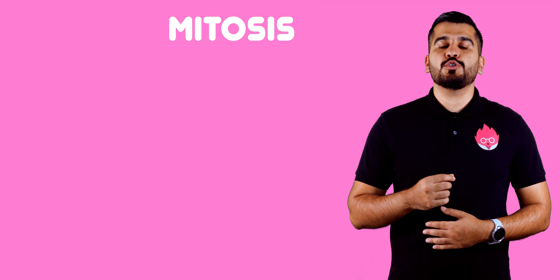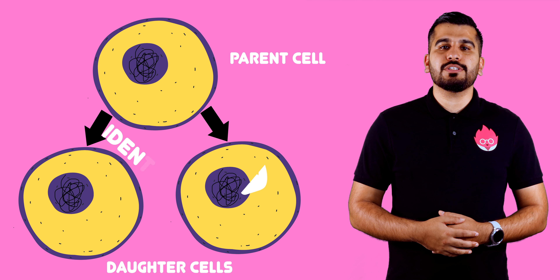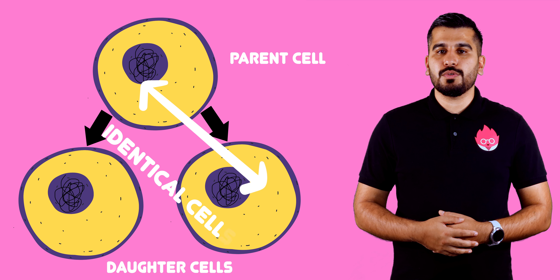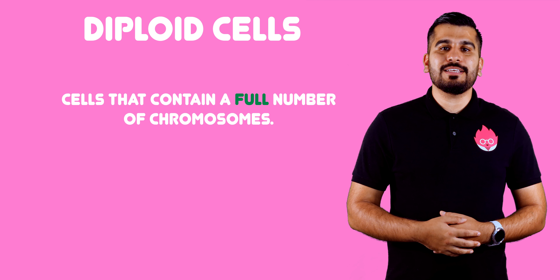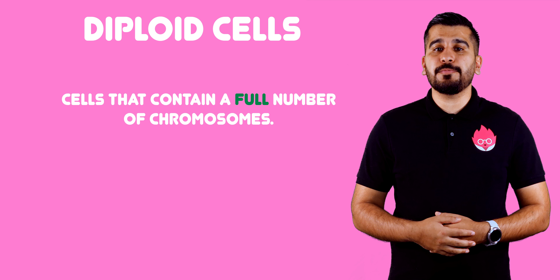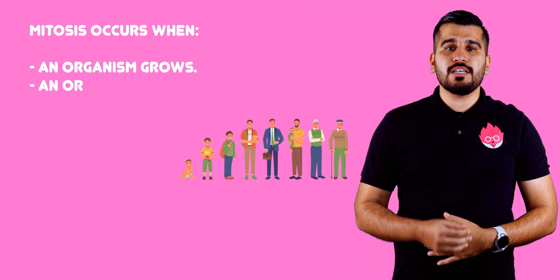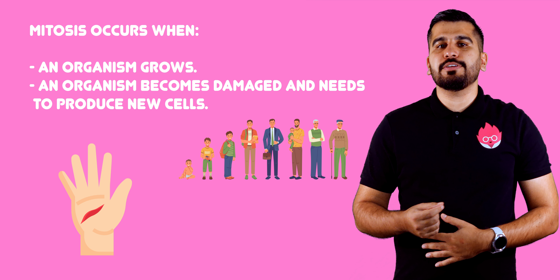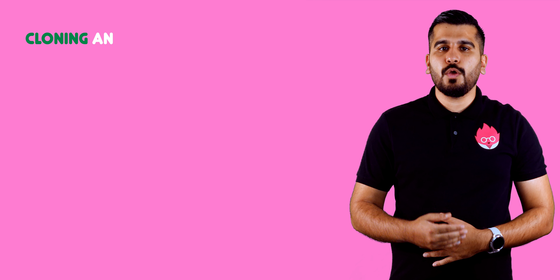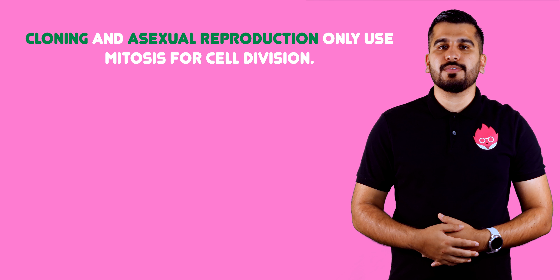Mitosis is a cell division that produces two daughter cells identical to the parent. These cells are described as diploid cells as they contain the full number of chromosomes. Mitosis occurs when an organism grows and when an organism becomes damaged and needs to reproduce new cells. Cloning and asexual reproduction only use mitosis for cell division.